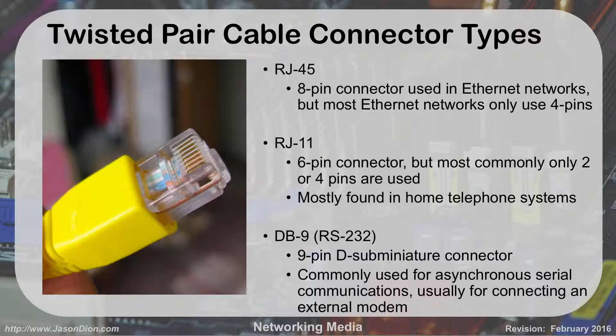There are three connector types for twisted pair. The most popular is the RJ45, which looks like a fat phone jack — it has all eight pins and is used for Ethernet networks, though only four pins are actually used and the other four are reserved for future use. RJ11 is a six-pin connector, usually with only two or four pins used — that's your standard telephone line. The unshielded twisted pair cabling is the same type used for both; the only difference is which connector you put on the end.